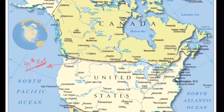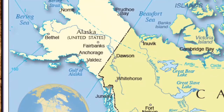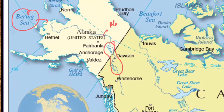Now let's move on to important rivers. The first is the Yukon River, which originates in Canada and flows through Alaska, draining into the Bering Sea. Gold can be found along the Yukon River.